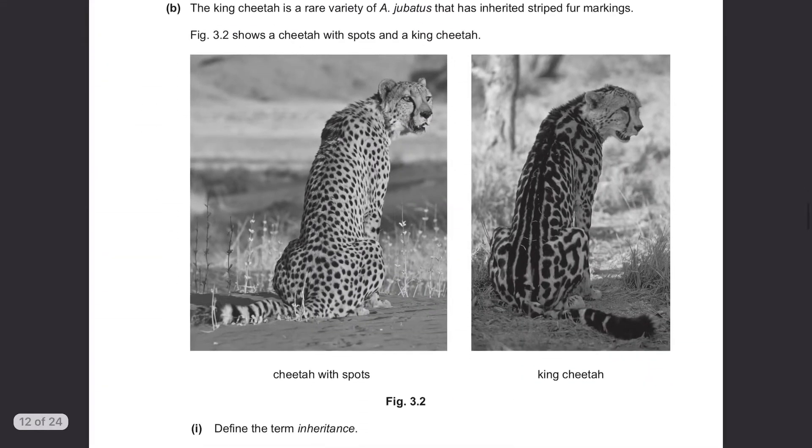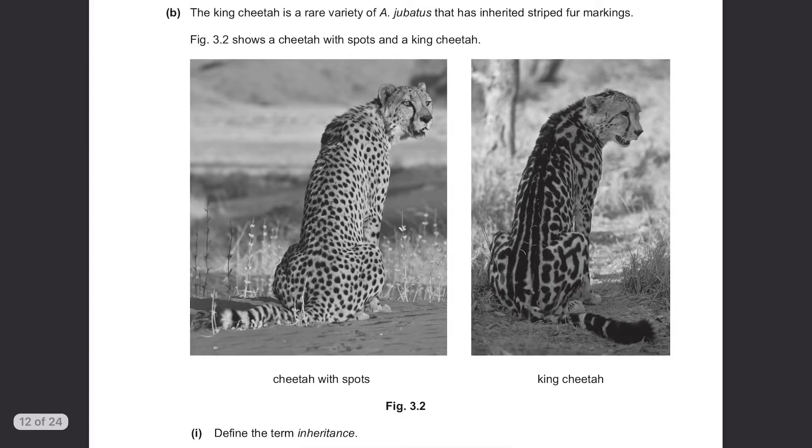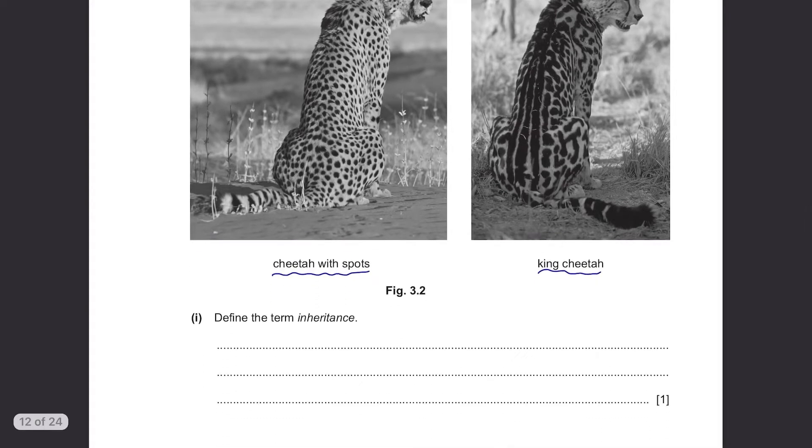Part B. The king cheetah is a rare variety of Acinonyx jubatus that has inherited striped fur markings. Figure 3.2 shows a cheetah with spots and a king cheetah. Define the term inheritance. Definition of inheritance is transmission of genetic information from generation to generation.